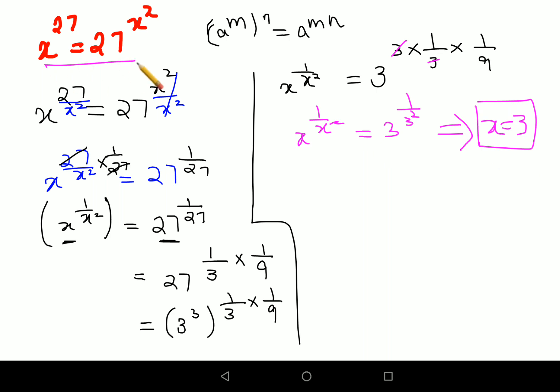Now let's put it in your question and cross verify. Your LHS looks like 3 raised to 27. That is your LHS. Now your RHS is 27 raised to 3 square. This will be 3 square.